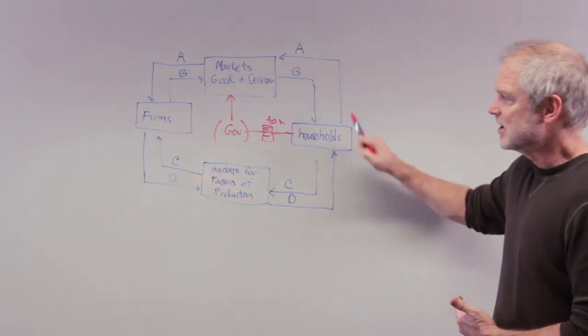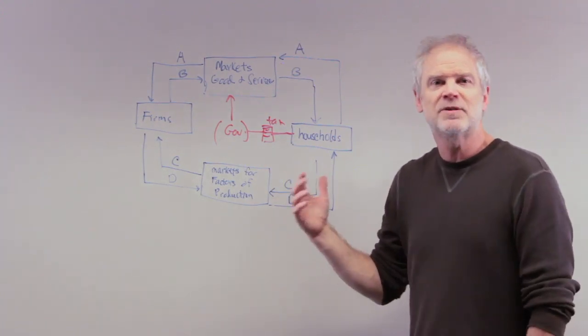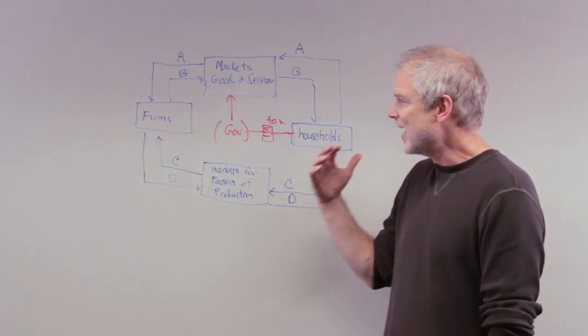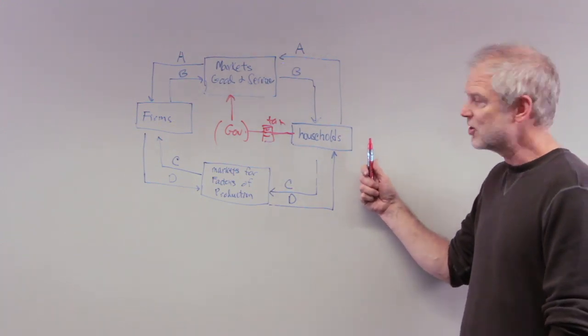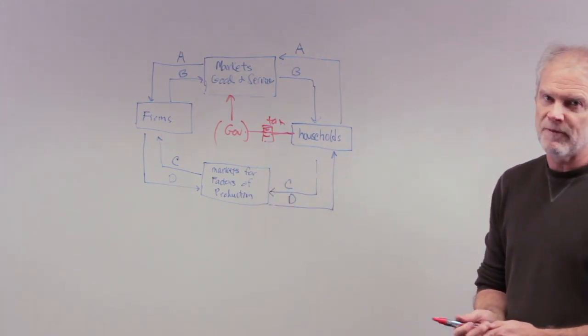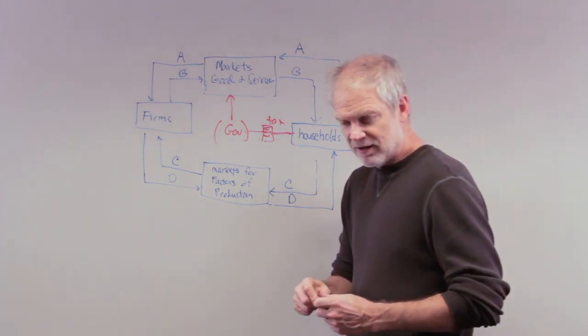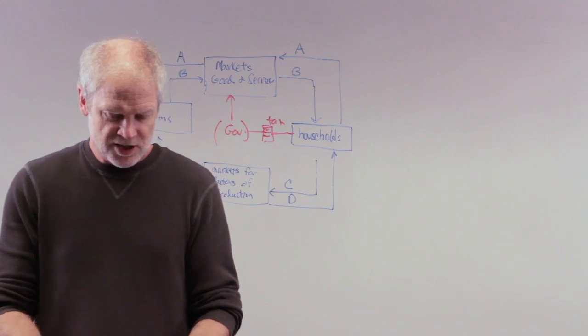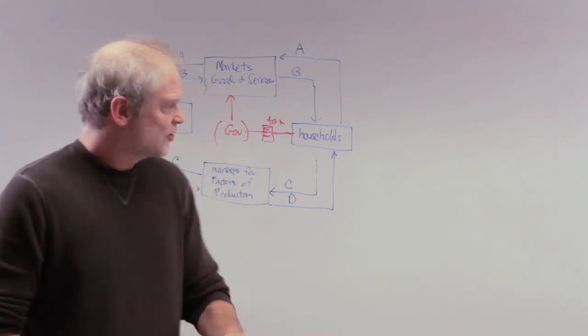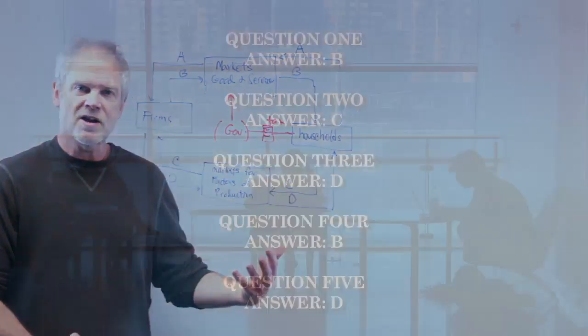So even a simple diagram like this can be used to help give a rationale for why, in a recession, when households don't spend as much, government should step in and spend more. Alright, I will stop there. I want you to get the basic concept of a production possibility frontier and the circular flow diagram as a model of the economy.